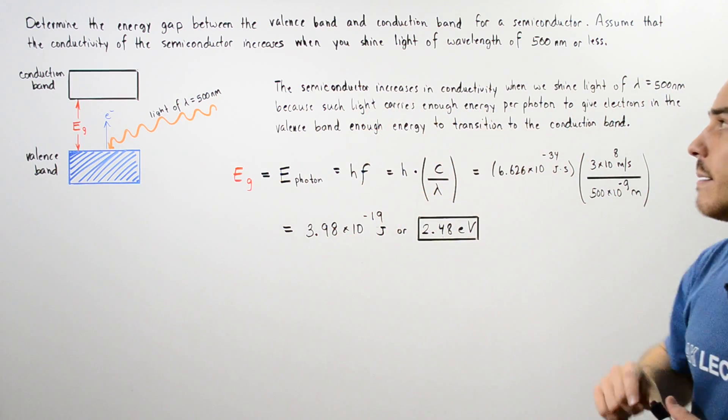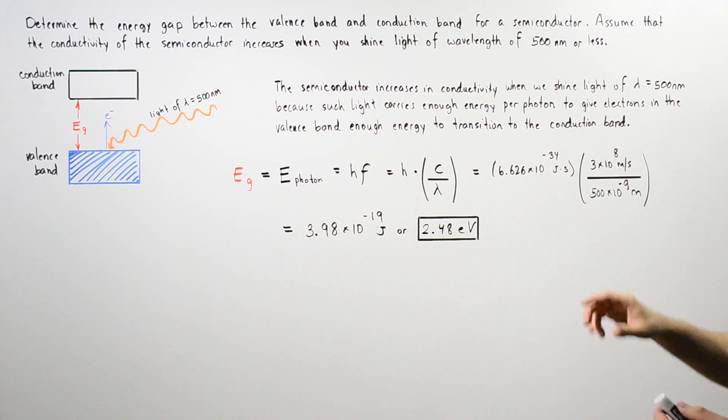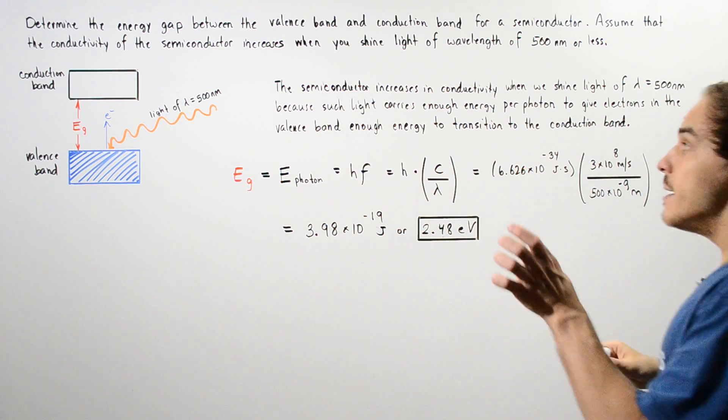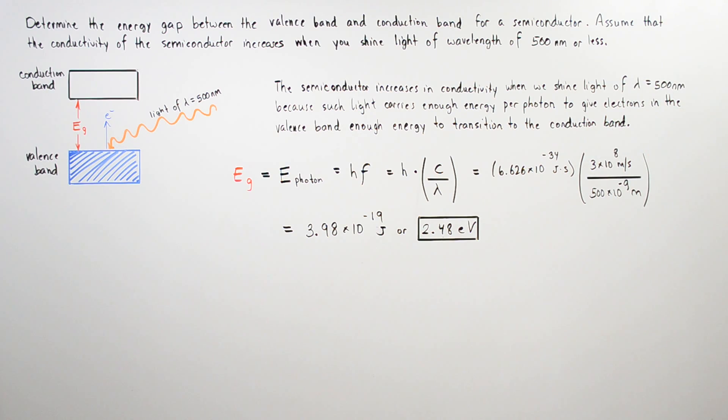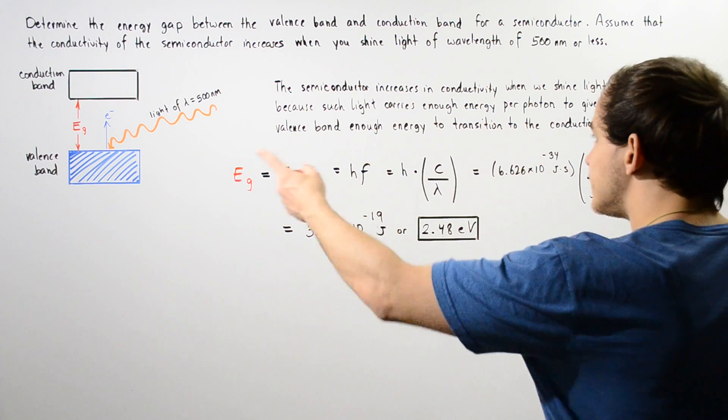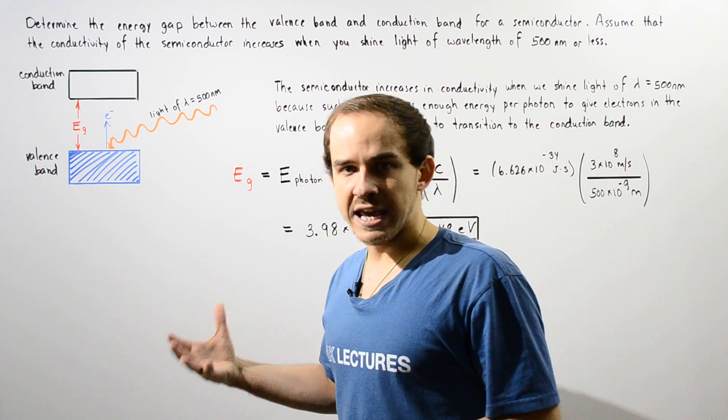So the semiconductor increases in electric conductivity when we shine light of this wavelength or less, because only then does the light carry enough energy per photon to give to the electrons in our valence band for that transition to actually take place.